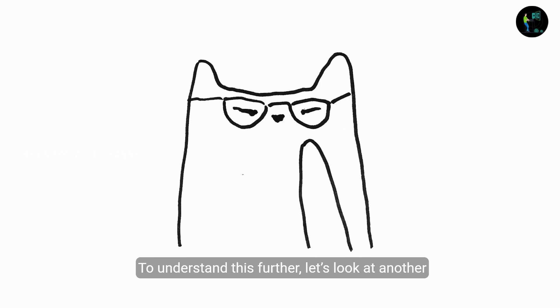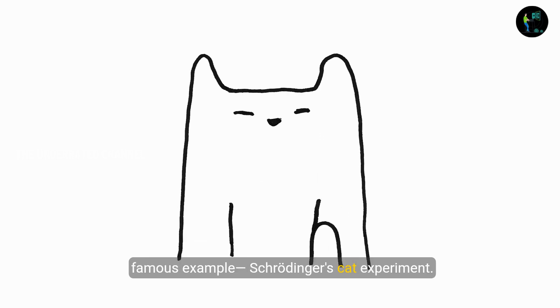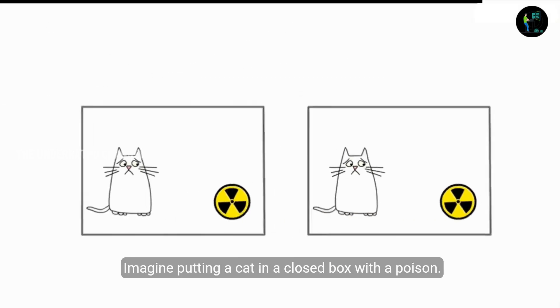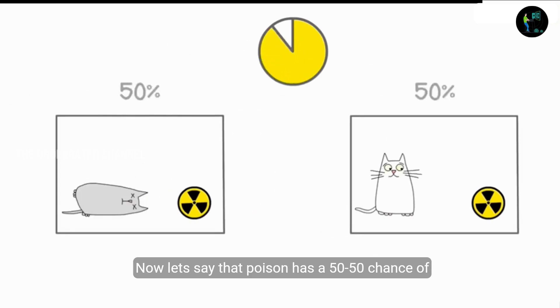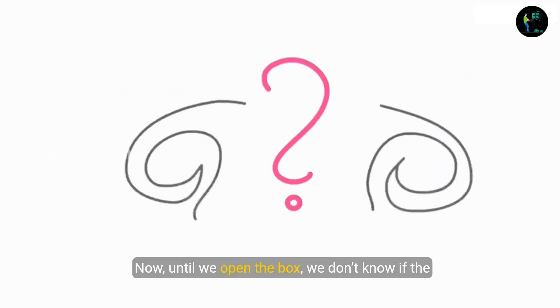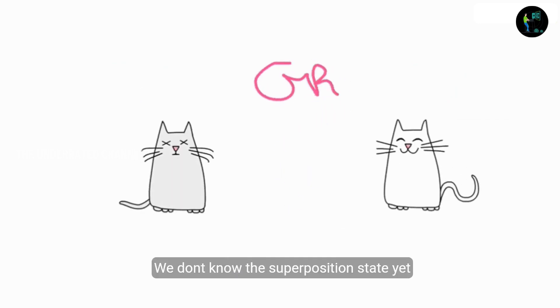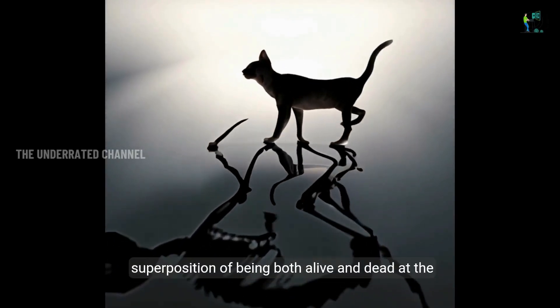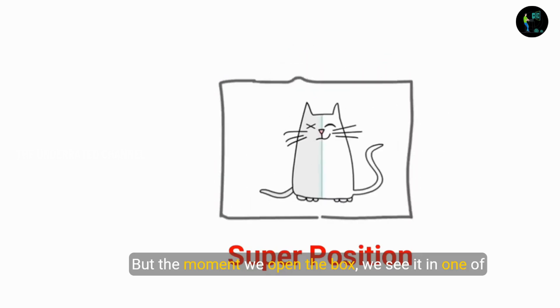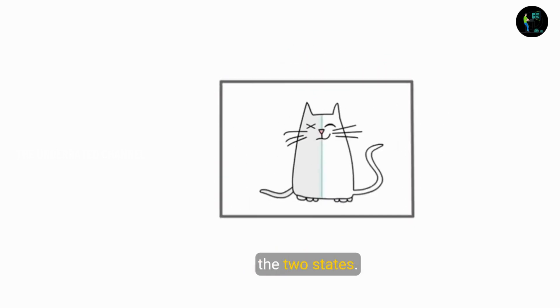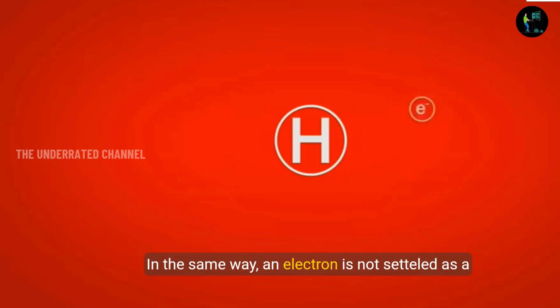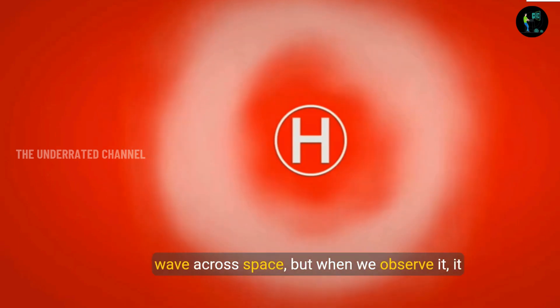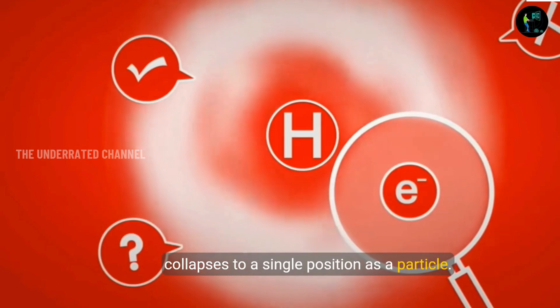To understand this further, let's look at another famous example, the Schrödinger Cat's experiment. Imagine putting a cat in a closed box with a poison. Now let's say that poison has a 50-50 chance of being released. Now until we open the box, we don't know if the cat is alive or dead. We don't know the superposition state. Quantum physics suggests that the cat exists in a superposition of being both alive and dead at the same time. But the moment we open the box, we see it in one of the two states.